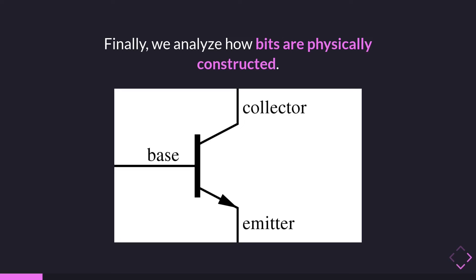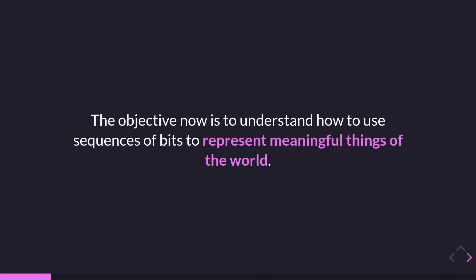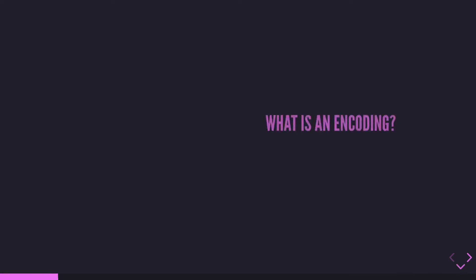Transistors can encode the zero or one aspect of a bit. Now the objective is to understand how we can use sequences of bits to represent meaningful things of the world, because computer science is all about bits but the useful aspect is that it allows us to model things in the real world — physical phenomena, textual characters, even this presentation itself saved on a digital medium through sequences of bits representing letters, colors, size, and so on.